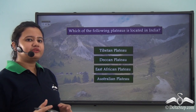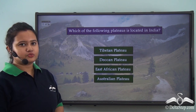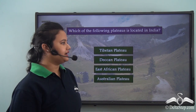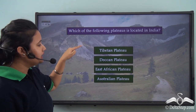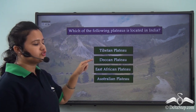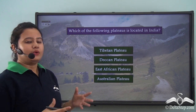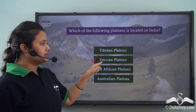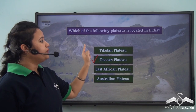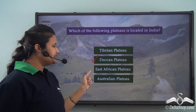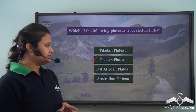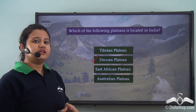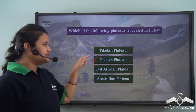Which of the following plateaus is located in India — Tibetan Plateau, Deccan Plateau, East African Plateau, or Australian Plateau? The correct answer is the Deccan Plateau. It is situated in India, whereas the Tibetan Plateau is in China, the East African Plateau is in Africa, and the Australian Plateau is in Australia.